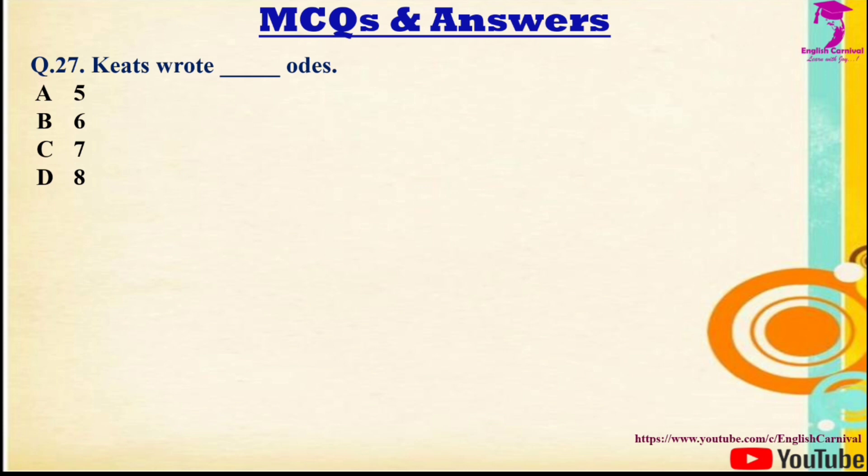Question 27: John Keats wrote — odes. Options: A) Five, B) Six, C) Seven, D) Eight. The correct answer is B — he wrote six odes.